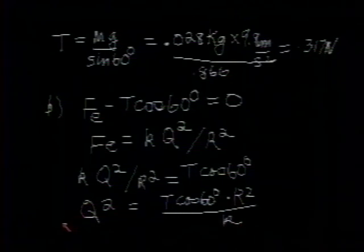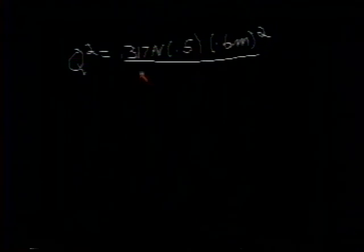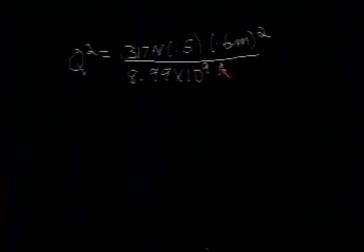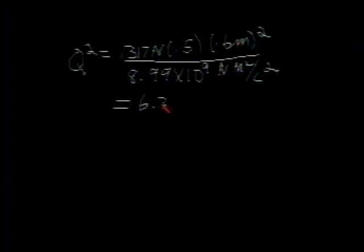And write that q squared then is equal to T, which is 0.317 Newtons, multiplied by the cosine of 60 degrees, which is 0.5, multiplied by r squared, which is 0.6 meters, 60 centimeters is 0.6 meters squared. Divide this by the constant K, which is 8.99 times 10 to the 9th Newtons times meters squared per coulombs squared. If you work that out, you'll find that this comes out to be 6.34 times 10 to the minus 12 coulombs squared.